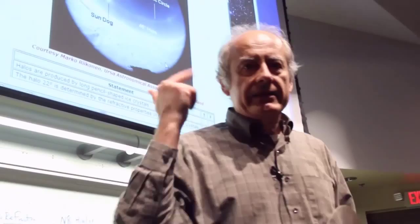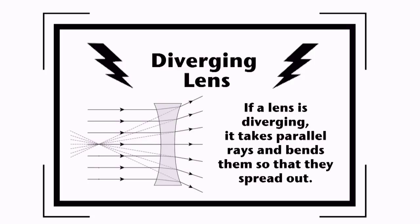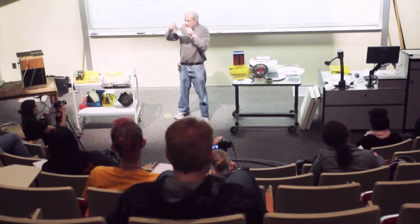If a lens is diverging, it takes parallel rays and bends them so that they spread out. If you've got big face, it's the magnifying glass. It's converging.